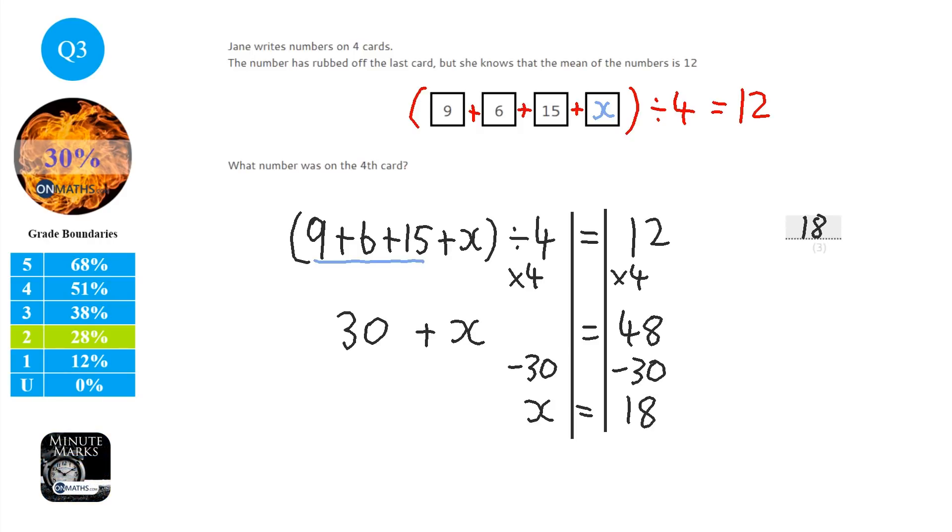So I know the answer is 18, but I can check that, just to check whether I've got it right. So 9 plus 6 plus 15 plus 18 is going to be 48. 48 divided by the amount of numbers, which is 4. So 48 divided by 4 is 12. So that's my answer.